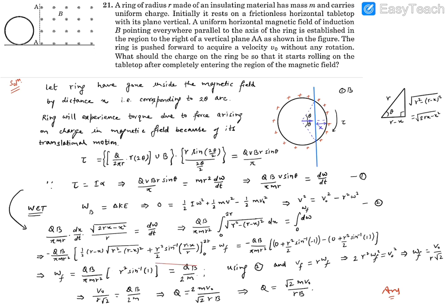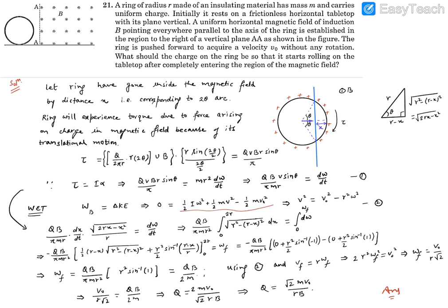This is the final angular velocity ensuring the pure rolling condition when the ring is inside the magnetic field. Now using the work-energy theorem: work done by the magnetic force is zero, so the final kinetic energy (rotational plus translational) equals the initial kinetic energy. With I = MR², after cancelling ½M, we get R²ω² + V² = V₀². So V² = V₀² − R²ω². That's equation number two, valid throughout the entire motion.